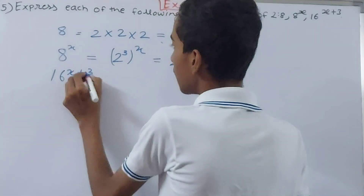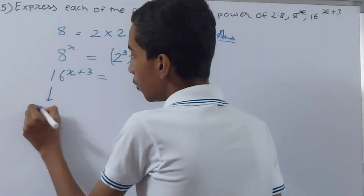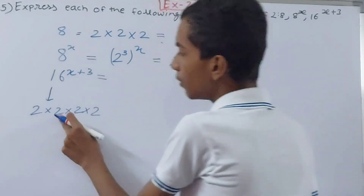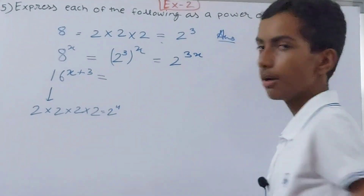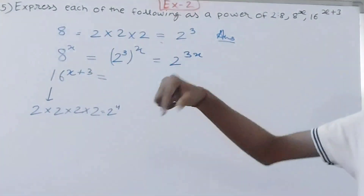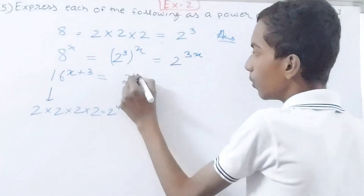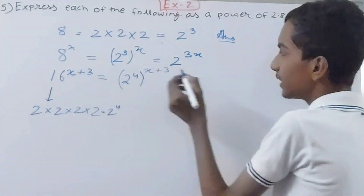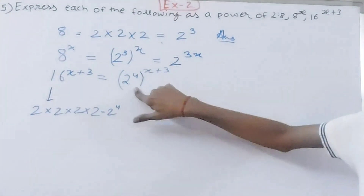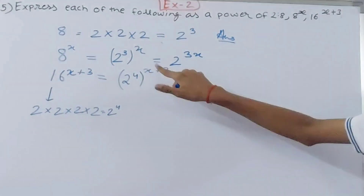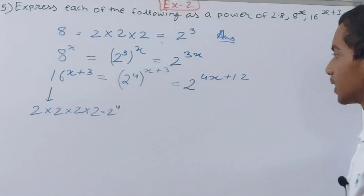Next we have 16 to the power (x + 3). Here we have 16, not 8, so keep that in mind. 16 can be written as 2 × 2 × 2 × 2, which is 2 to the power 4. So I replace 16 with 2⁴, and the exponent is (x + 3). Opening the bracket, 4 multiplies with x and 4 multiplies with 3, giving 2 to the power (4x + 12), and that is your answer.